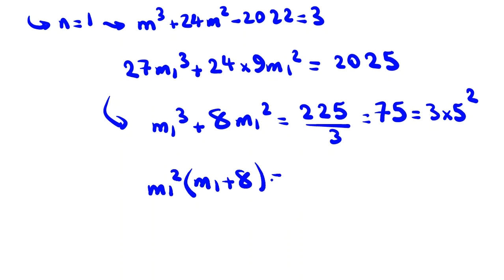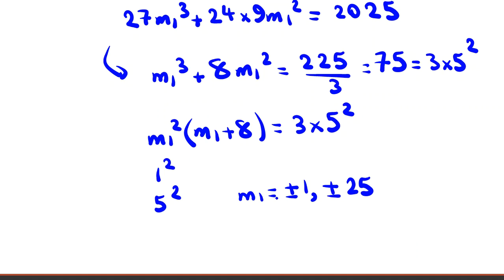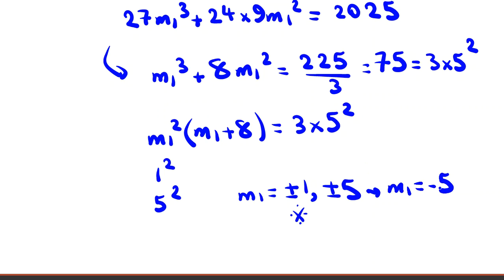Since m₁² must be a perfect square, the only possible values are m₁² = 1 or m₁² = 25, so m₁ = ±1 or m₁ = ±5. Replacing ±1: 1 × (1 + 8) = 9 ≠ 75 — doesn't work. Replacing m₁ = 5: 25 × 13 ≠ 75 — doesn't work. Replacing m₁ = −5: 25 × (−5 + 8) = 25 × 3 = 75. It works! So m₁ = −5.